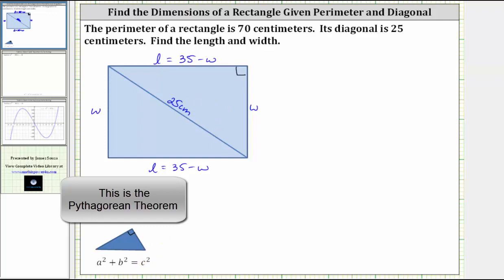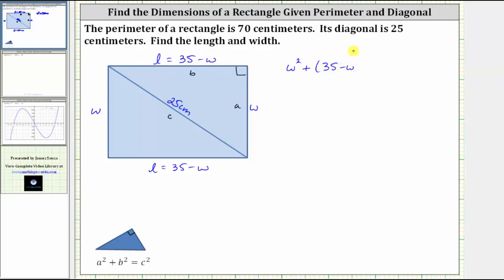So notice how for the Pythagorean theorem, this is the hypotenuse C, and these would be the legs of the right triangle. Let's call this A, and let's call this B. Which means W squared plus, again we want one equation in terms of one variable, so we won't use L, we will use 35 minus W. So we have plus the square of 35 minus W must equal 25 squared.